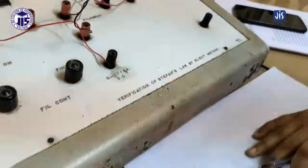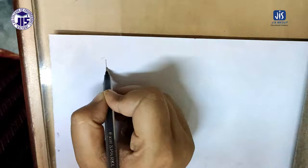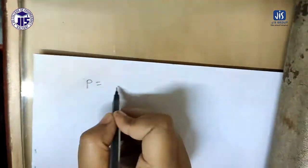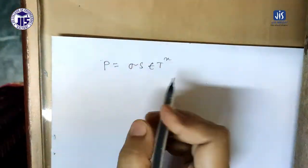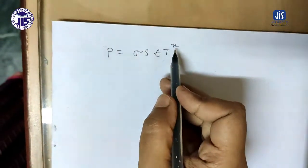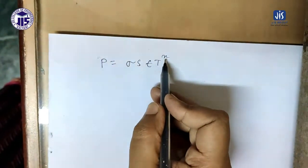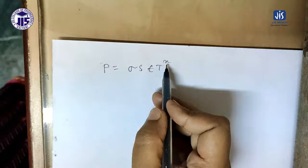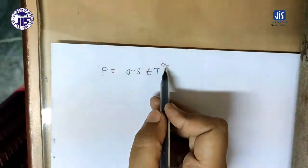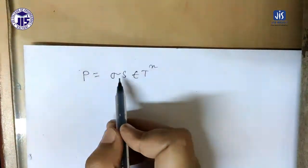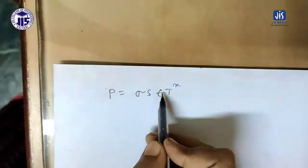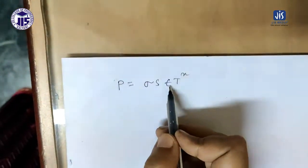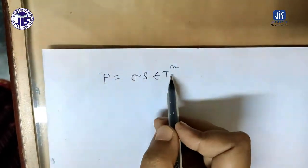Stefan's law of black body radiation in terms of power can be written as P = σ·S·ε·T^n. This is a general expression. For a perfect black body n should be equal to 4, but here we are not using a perfect black body, so in general it is written as n. Here P is the power radiated by the black body, σ is Stefan's constant, S is the surface area, ε is the emissivity, and T is the absolute temperature.